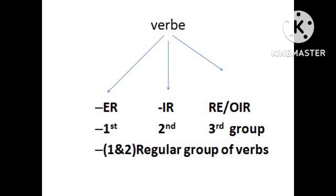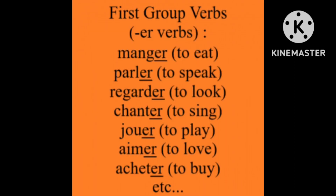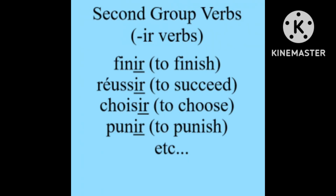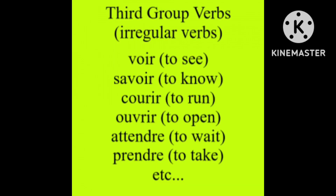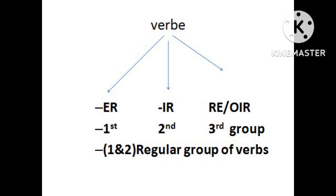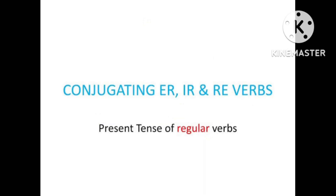In French, the verbs are divided into three groups: ER, IR, RE, and OIR. ER is considered as the first group verb. IR as the second group. RE and OIR are considered as the third group, irregular verbs. The first two groups are called regular verbs because they follow a pattern, whereas RE and OIR do not follow any pattern.